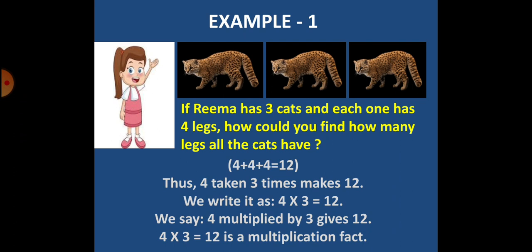So, we write it as, 4 multiplied by 3 equal to 12. We can say that, 4 multiplied by 3 is 12. And 4 into 3 is equal to 12 is a multiplication fact.